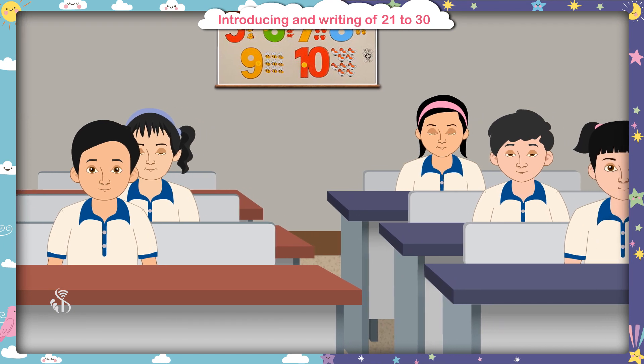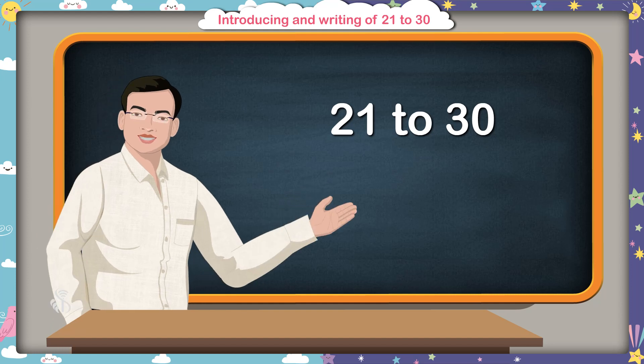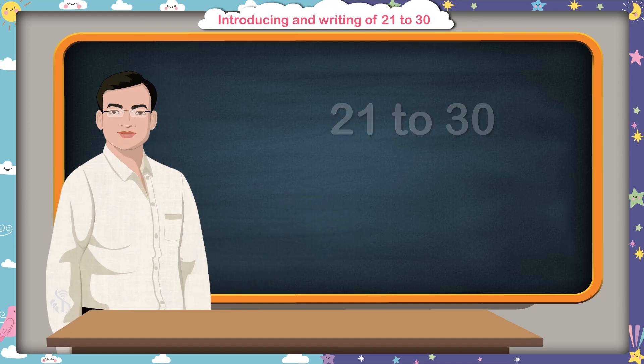Children, you have learned to write numbers from 1 to 20. Today, we will learn to write the numbers from 21 to 30. Come on, let's start now.